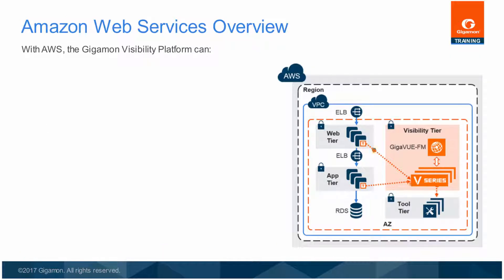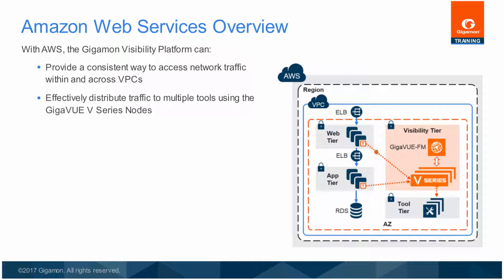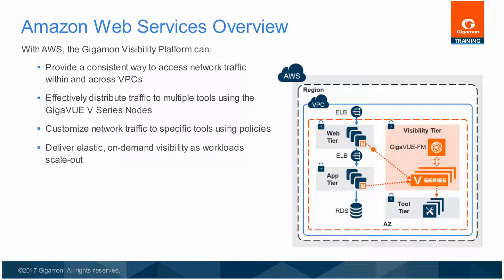An efficient and optimal solution to overcome these challenges is to use the Gigamon Visibility Platform for AWS — the industry's first holistic visibility platform that provides consistent visibility into network traffic within and across VPCs. It enables effective distribution of traffic to multiple tools, customized distribution using pre-configured policies, and delivery of elastic on-demand visibility as workloads scale out. With the Gigamon Visibility Platform, customers can create a comprehensive visibility tier in an AWS VPC with one consistent way to access, categorize, and consolidate the delivery of network traffic to out-of-band security and performance management tools.